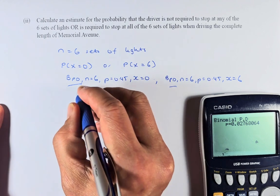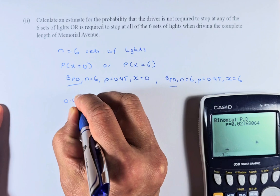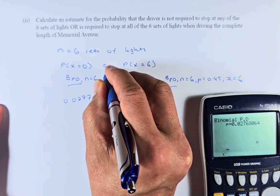And then now you execute again. And the answer is going to be, when x equal to 0, the probability is 0.0277. You round them up. OR means you add.